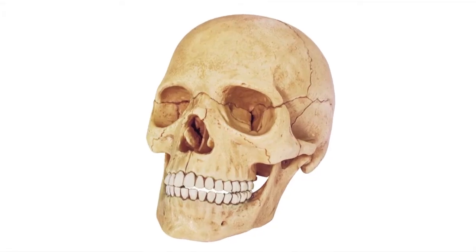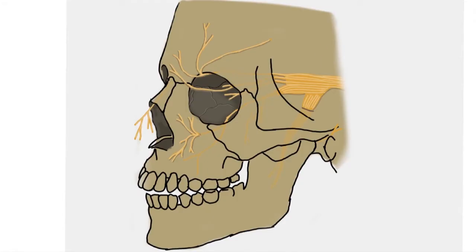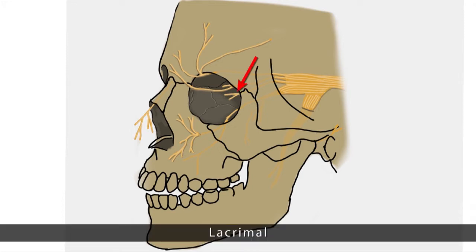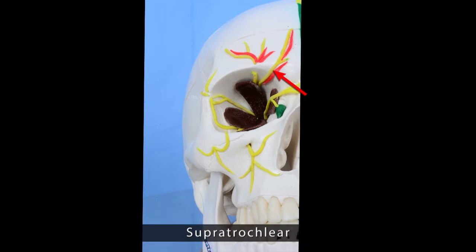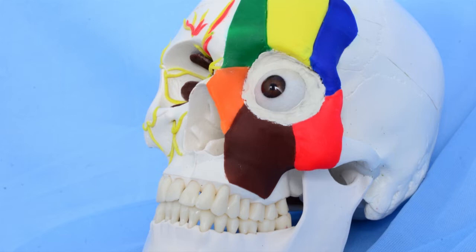The anatomy of the orbit with supplying vessels and nerves is important. The ophthalmic division of the trigeminal nerve enters the orbit through the superior orbital fissure and divides into the lacrimal, frontal, and nasociliary branches. The frontal branch divides to form the supratrochlear and the supraorbital nerves. The supratrochlear nerve innervates the medial upper eyelid and the lower forehead, while the supraorbital branch innervates the scalp and the middle part of the upper eyelid.